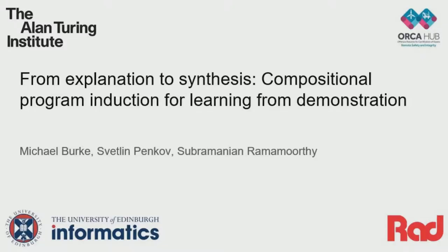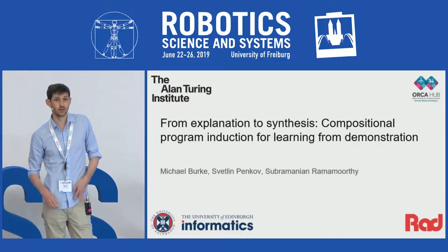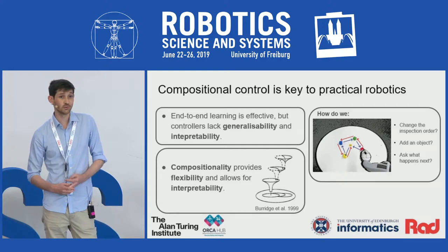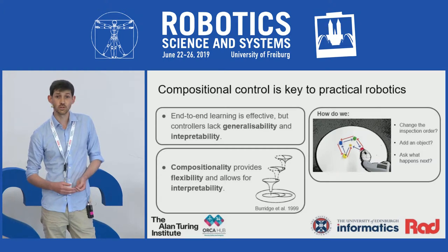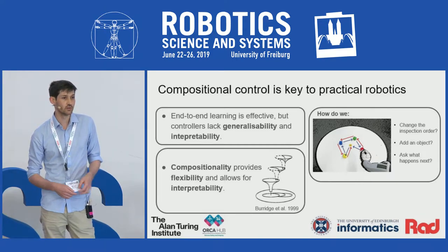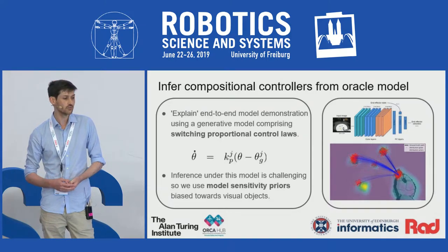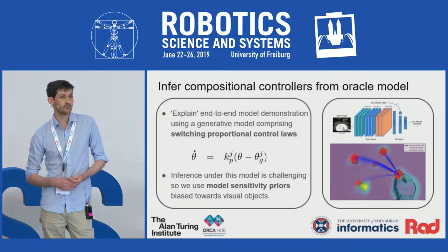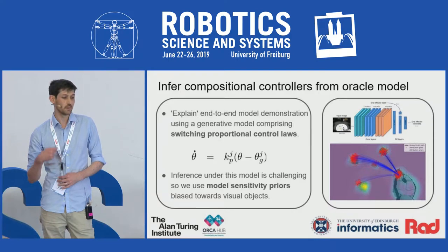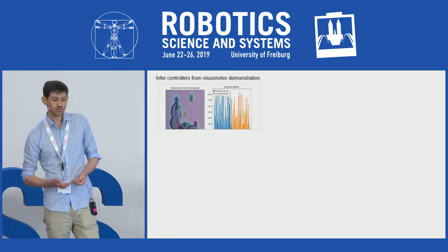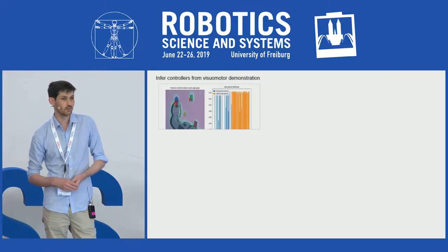Hi everyone, I'm Michael Burke from the University of Edinburgh. I'm going to talk about compositional program induction for learning from demonstration, which can also be used to explain an oracle model or model learned using end-to-end learning. We believe that compositional control is key to practical robotics. End-to-end learning is effective, but controllers learned this way lack flexibility and interpretability — for example, in an inspection task, it's difficult to ask what the robot will do next or change the task configuration. In contrast, compositionality is quite flexible and potentially interpretable. We propose a method to infer compositional controllers from a demonstration sequence or oracle model — specifically, a set of switching proportional control laws that best explain a sequence, inferring the gains and reference points for the controllers. Inference under this model is hard, so we use attribution priors to help the inference process.